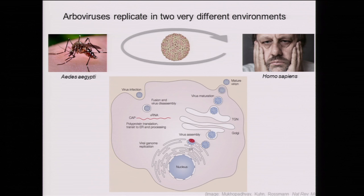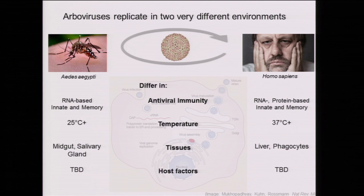While the general biology of replication is the same in both hosts—entry, uncoating of the viral RNA, which is basically an mRNA that expresses a single polyprotein cleaved by cellular and viral proteases, making 10 proteins that set up a replication complex at the ER, then virus egresses—those processes differ in important ways: antiviral immunity, replication temperature, the types of tissues encountered, and the host factors available to assist replication.